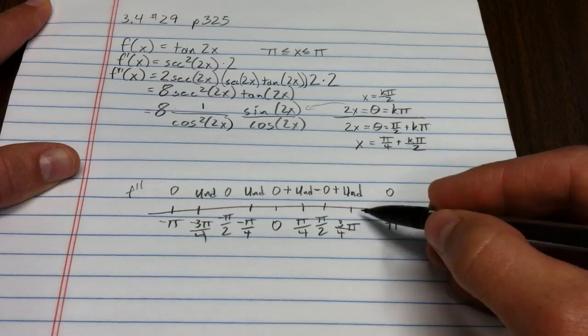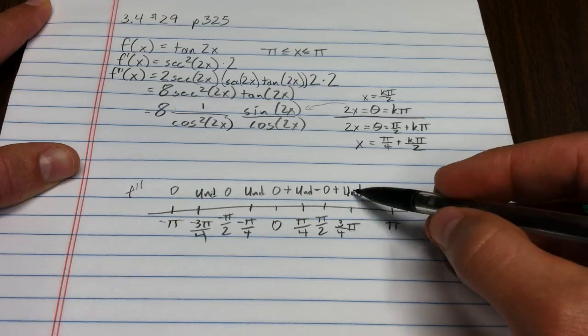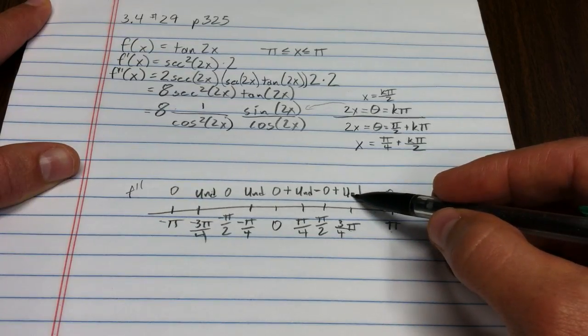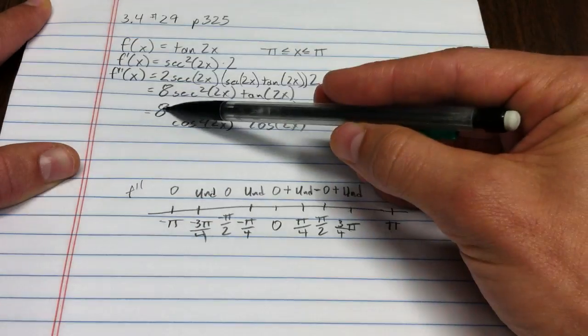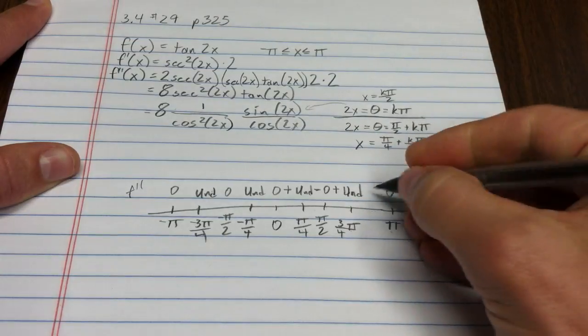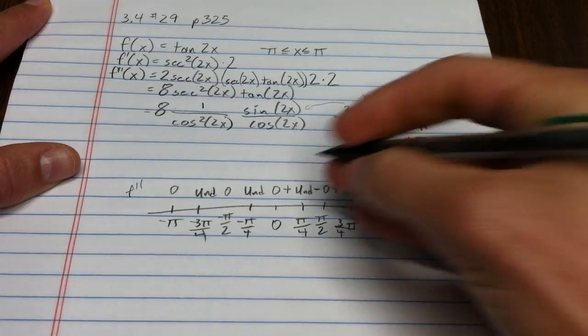Past this point, notice cosine becomes 0. That's why we're undefined. Then it becomes positive. Then we have positive, positive, positive, positive, and a negative. So, you can see that these are alternating.